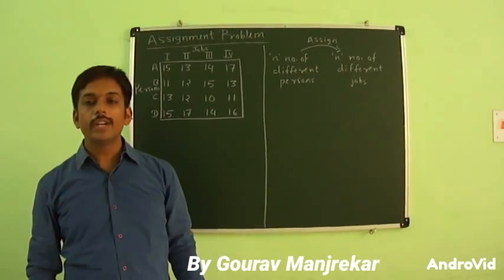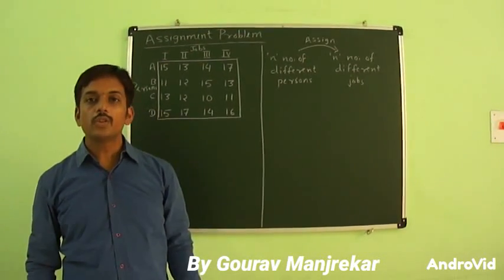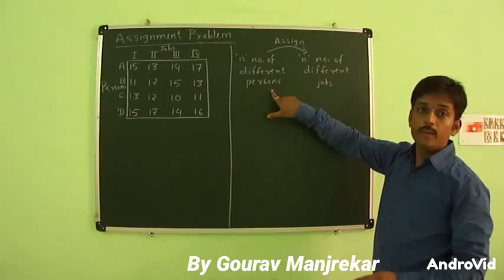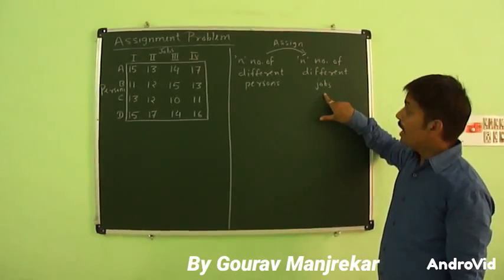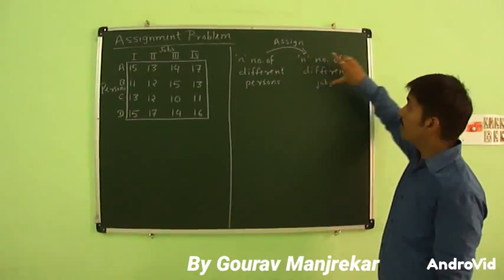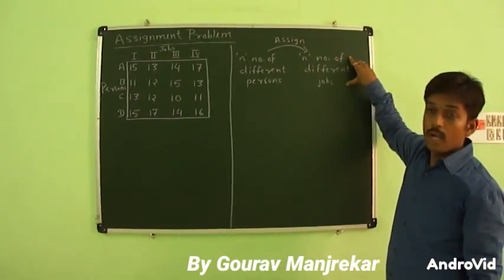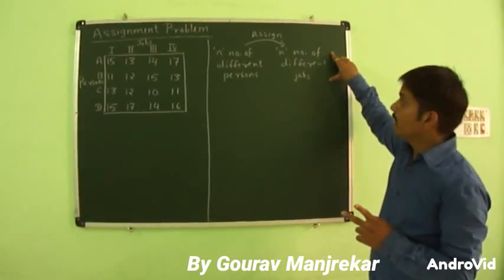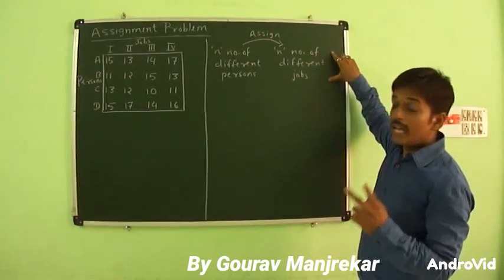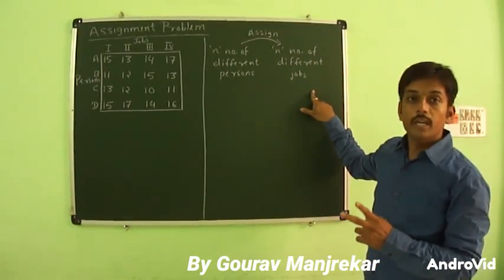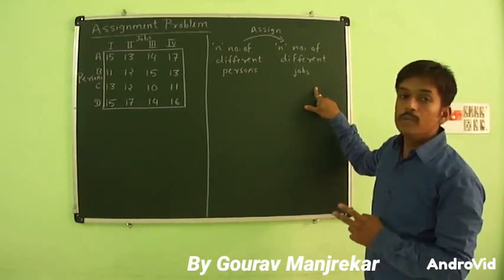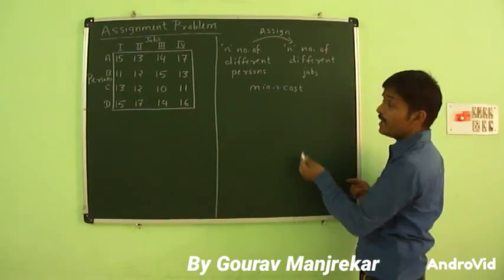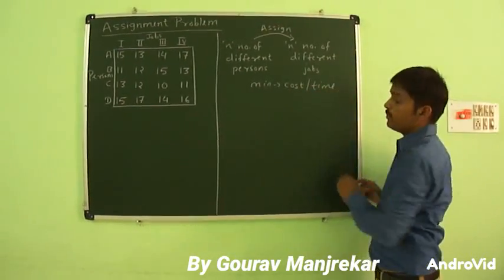Hello friend, today we are going to study the assignment problem. In the assignment problem we have n number of different persons and n number of different jobs. We assign these n persons to n jobs with the condition that each person is assigned to only one job, so the number of persons and jobs must be equal. Our objective is to minimize the cost or time of assignment.